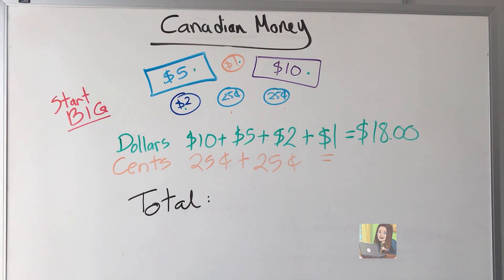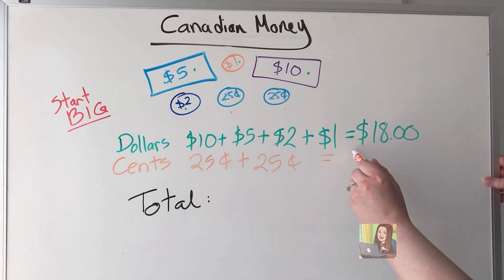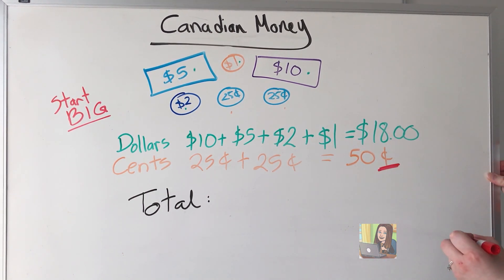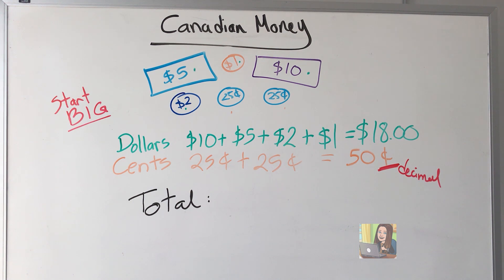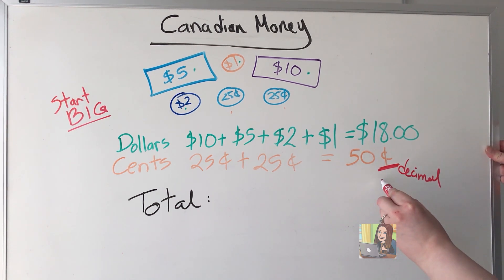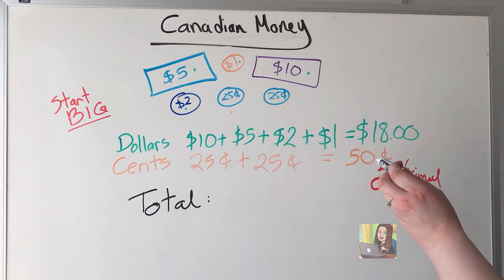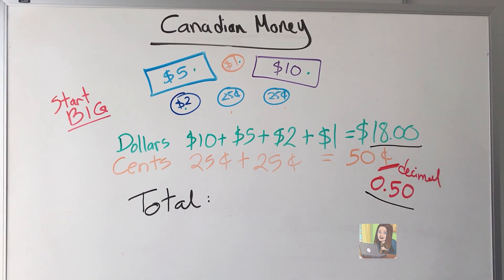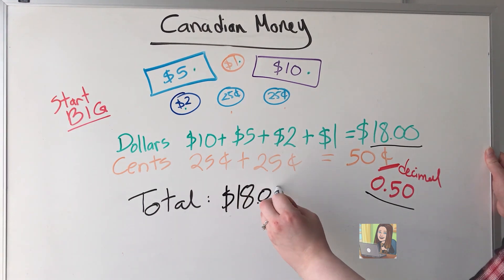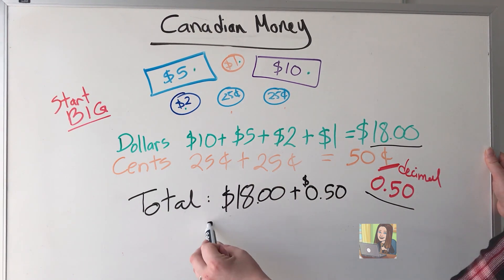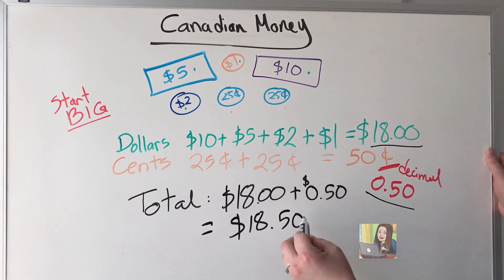Counting the quarters: $0.25, $0.50, $0.75, $1.00 — then $0.25, $0.50. Now I want you to start thinking of this as a decimal. Remember how earlier we had five cents written as $0.05? We're going to turn this into a decimal too — this becomes $0.50. Now all we do is take our dollars and our cents and put them together: $18 plus $0.50 gives me $18.50.